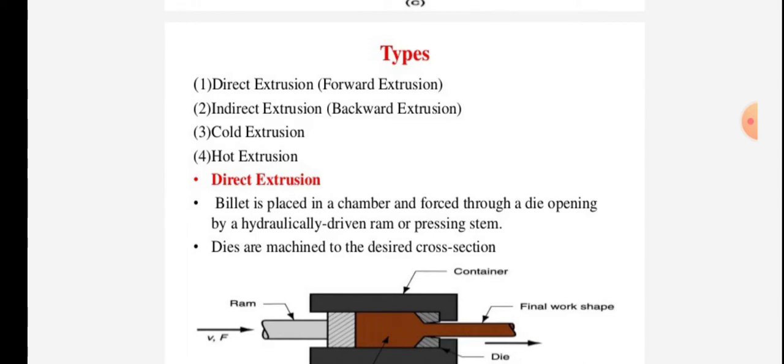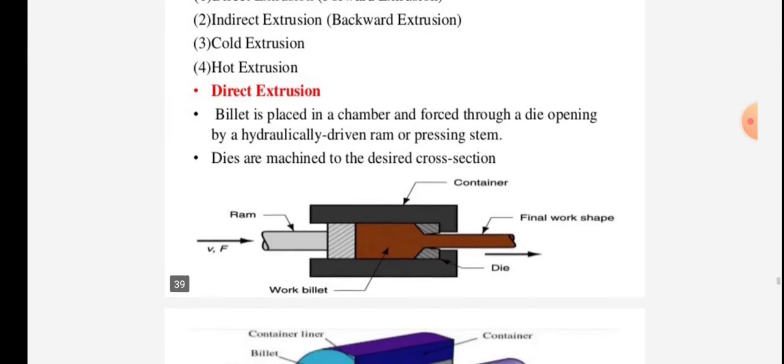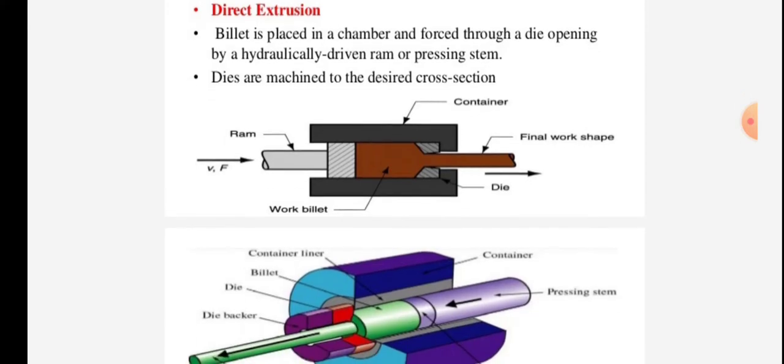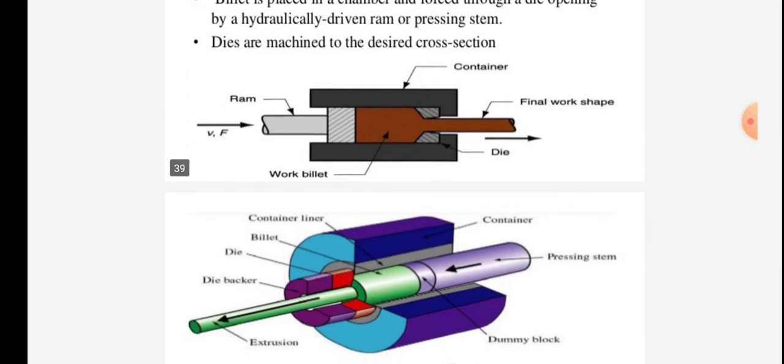Indirect extrusion, also called backward extrusion, cold extrusion, and hot extrusion. In direct extrusion, the billet is placed in a chamber and forced through a die opening by a hydraulically driven RAM or pressing stem. Dies are machined to the desired cross section.